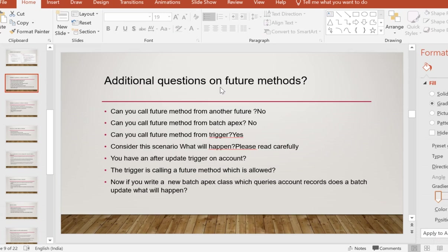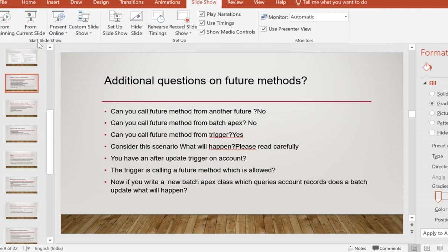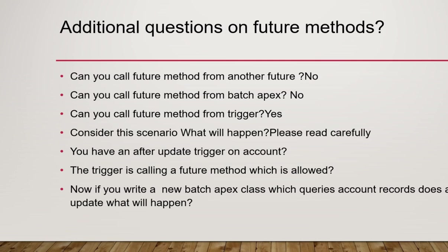Continuing with future methods, let's look at some more questions that could come your way. Can you call a future method from another future method? The answer is no — you cannot call one asynchronous method from another asynchronous method.